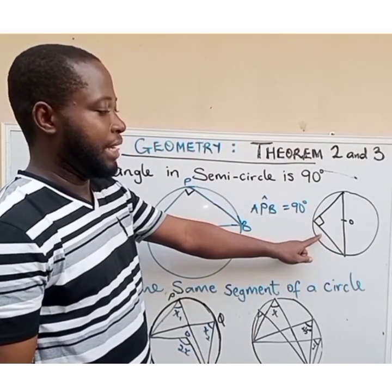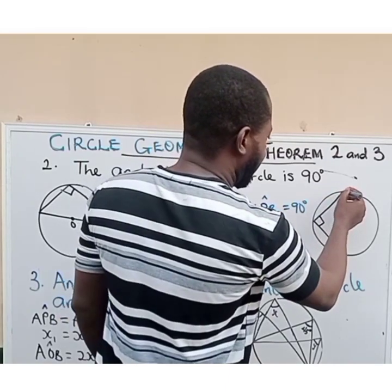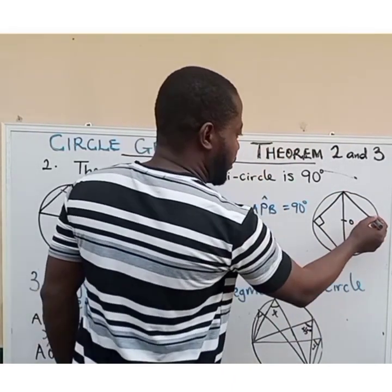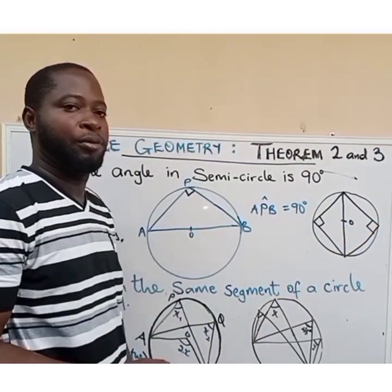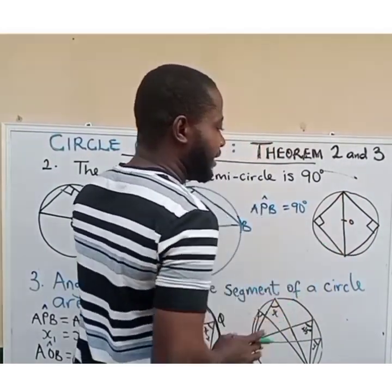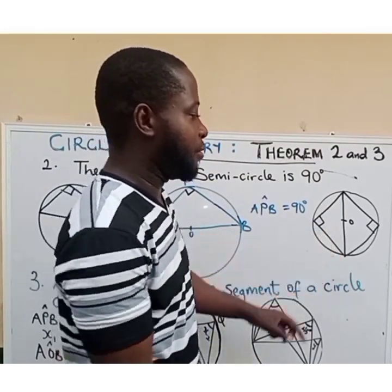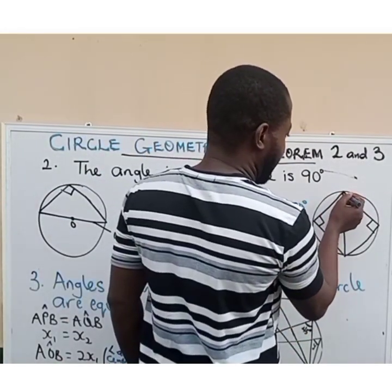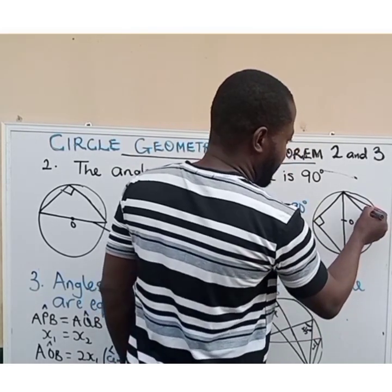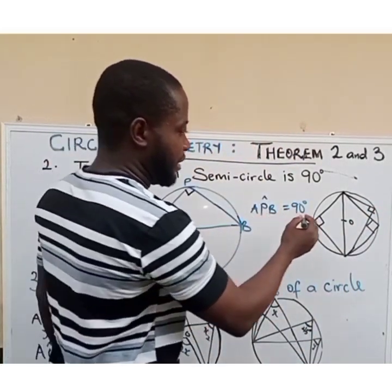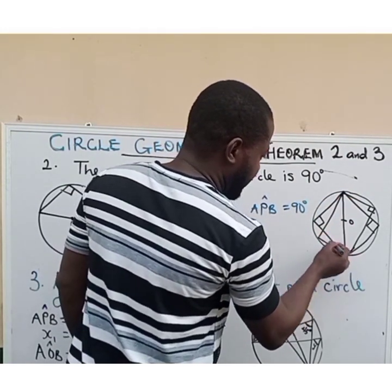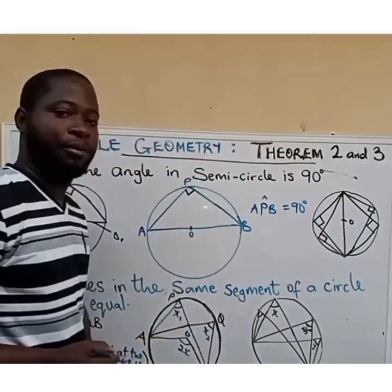If another angle forms in the other semicircle, it is also going to be a right angle triangle — 90 degrees. It doesn't matter where it falls, so long as it falls in the semicircle. For example, if it falls here, this is going to be a right angle. It can also come here — this other angle is also going to be a right angle.